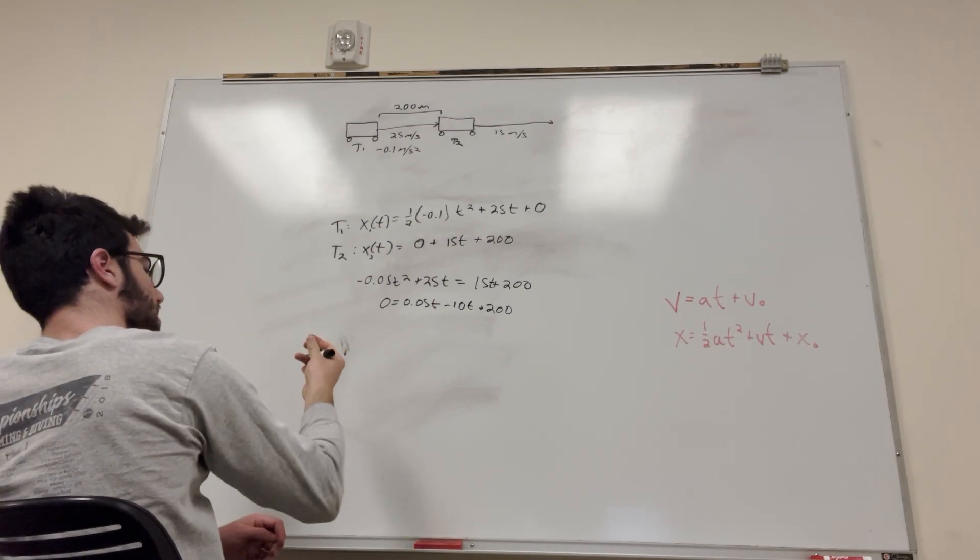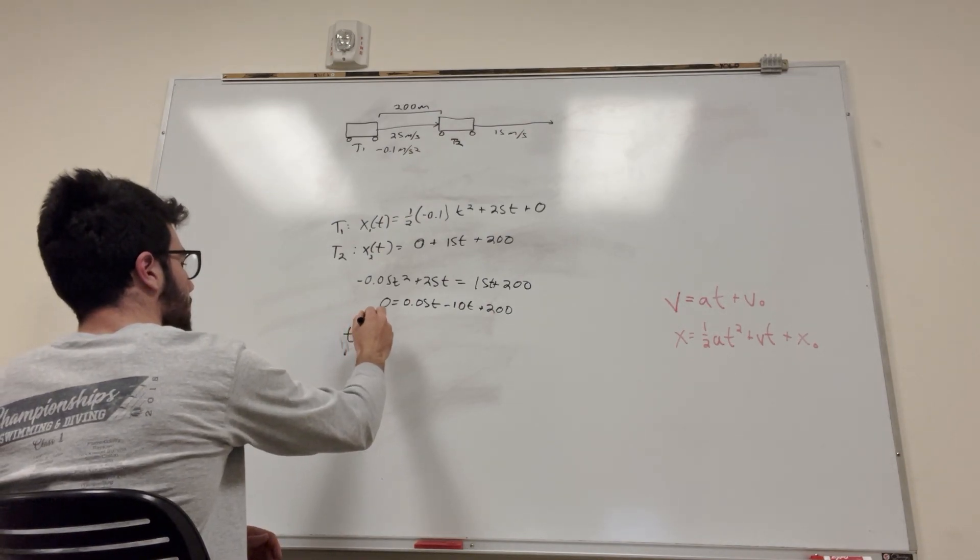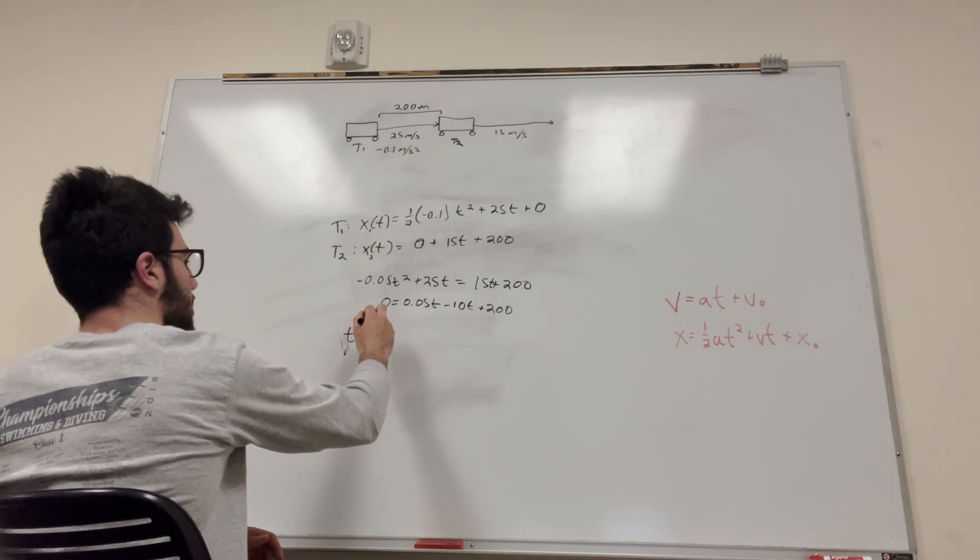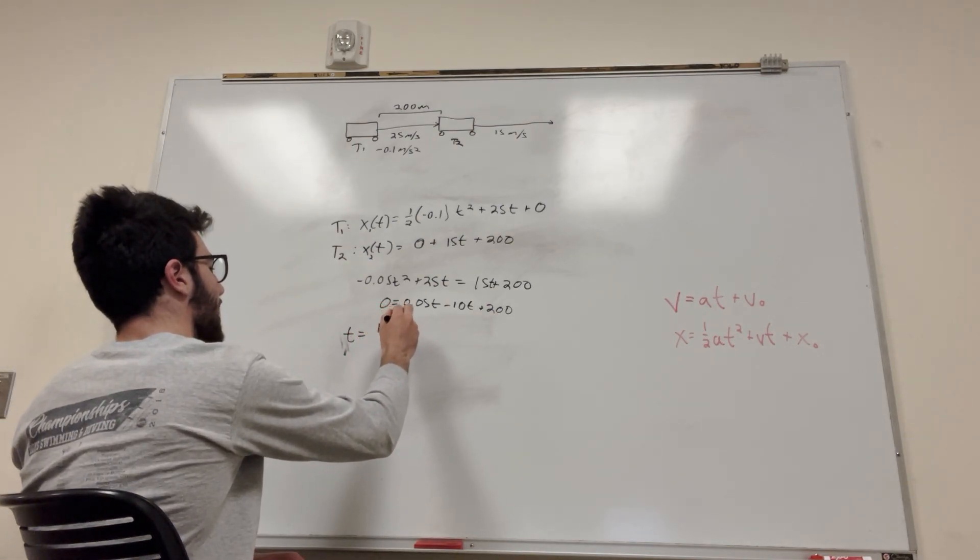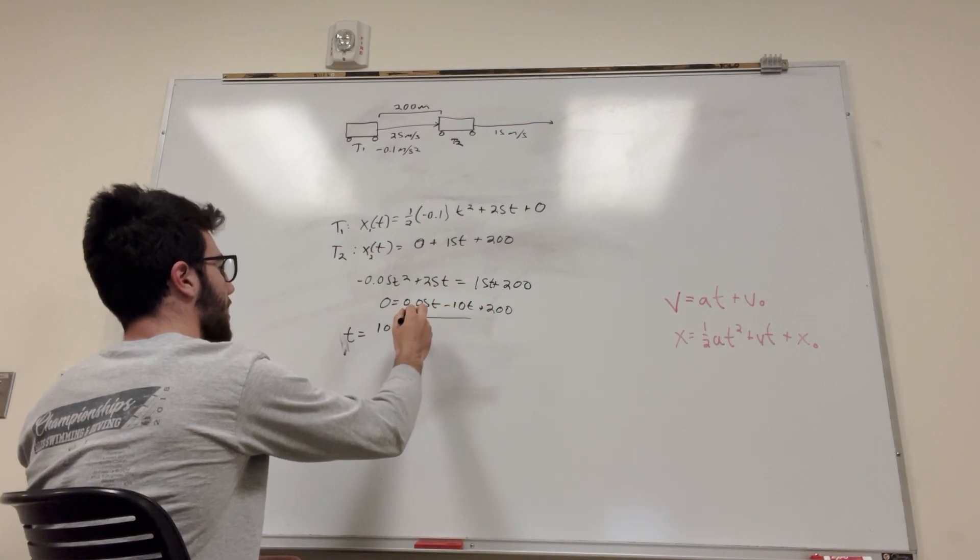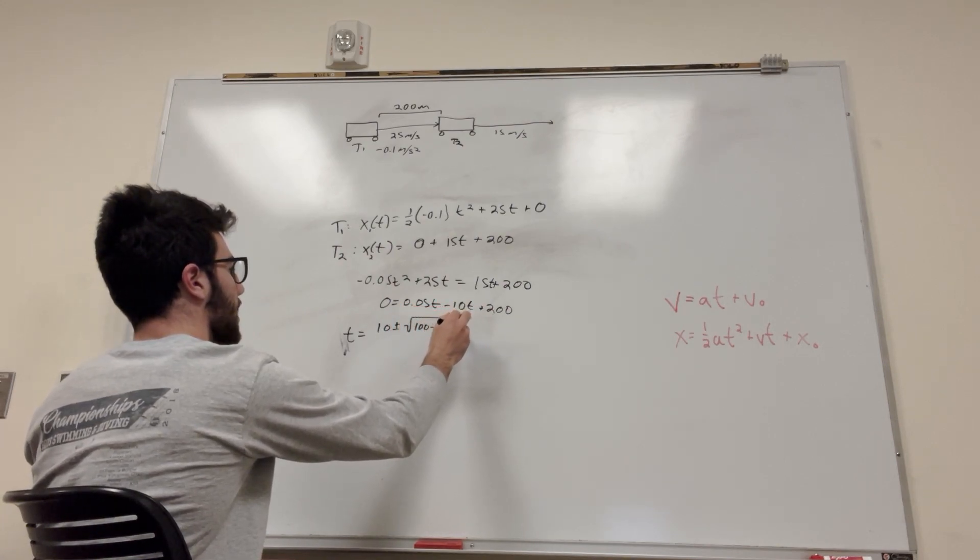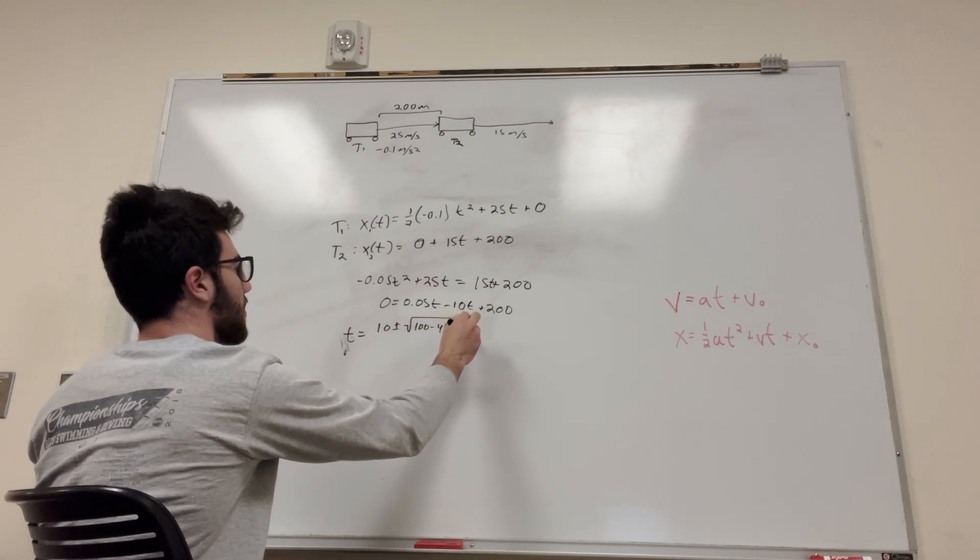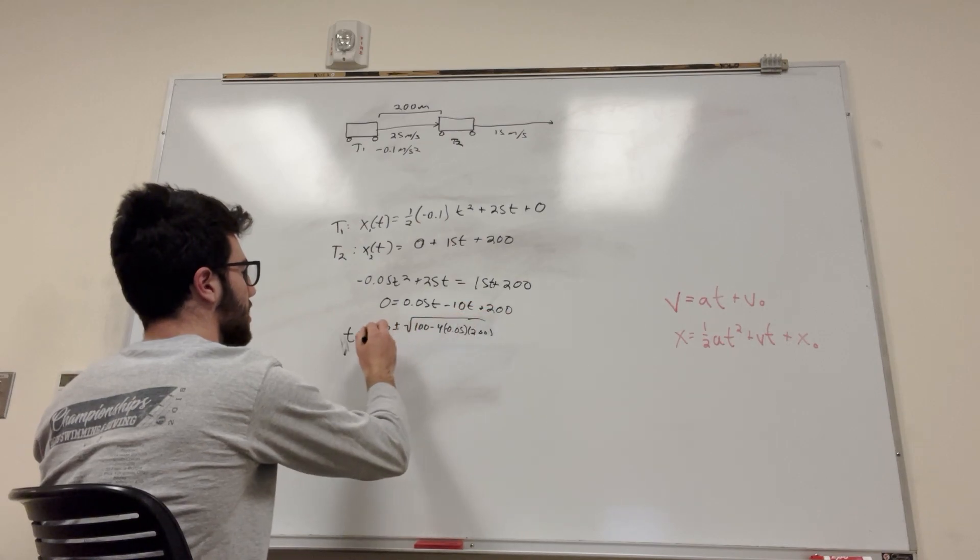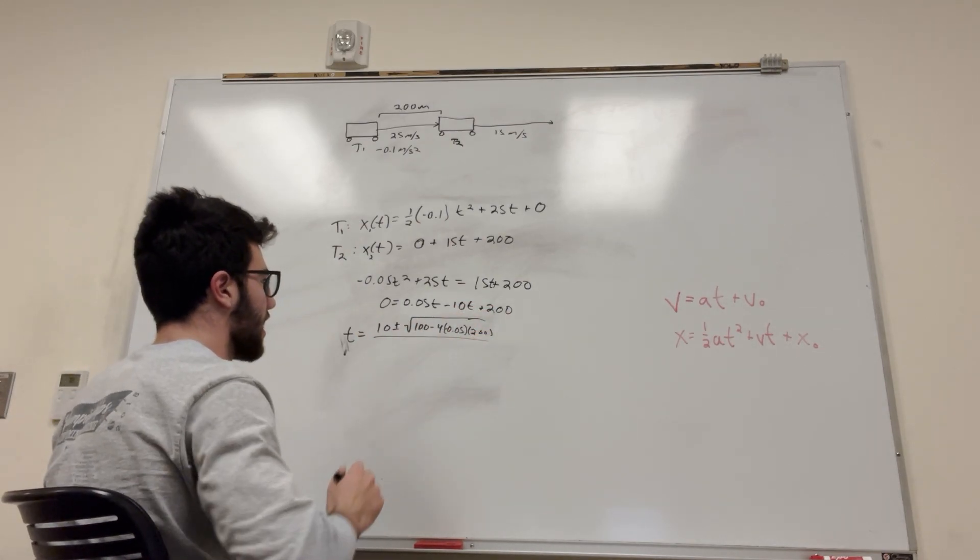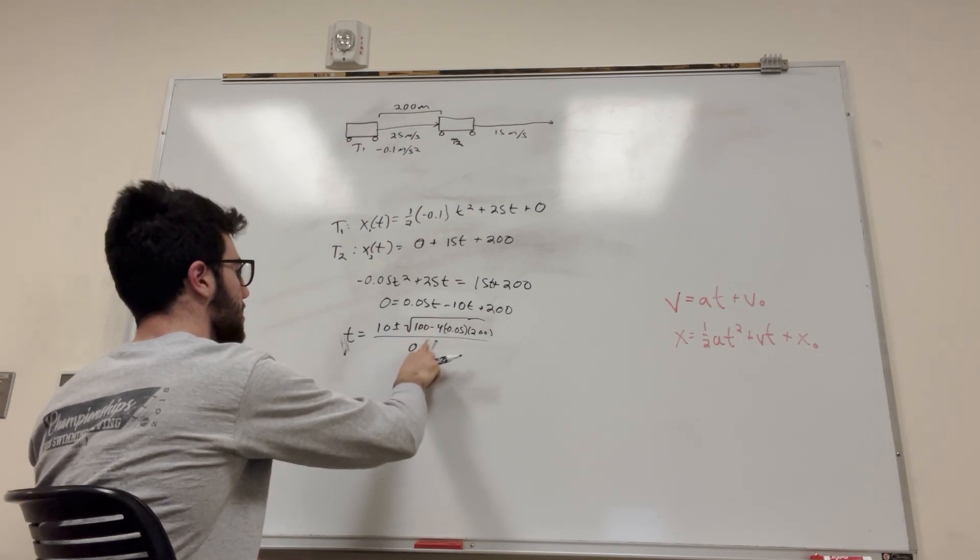It's not x, it's t. Markers are too good, actually. It's negative B. Yeah, okay. So, it's going to be 10 plus or minus the square root. B squared, so it'll be 100 minus 4 times negative 0.05 times 200. You guys got to learn this, over 2a, right? 0.1. All right.